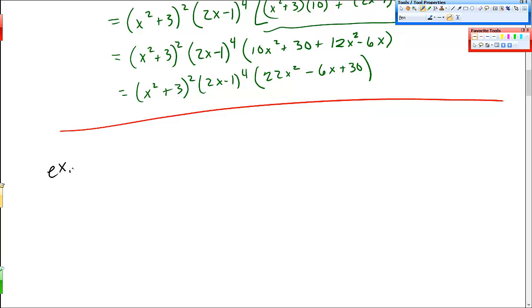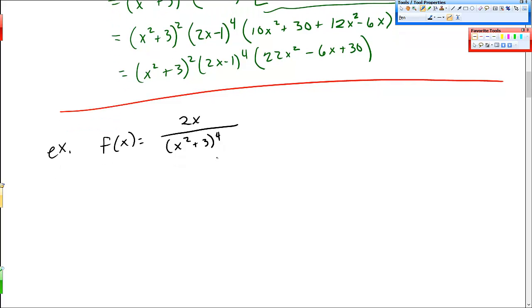Example. Let's do f of x is equal to 2x over x squared plus 3 to the fourth power. And so the main thing, okay, so the first thing I see in this problem is this big division sign. And so to me that says and kind of screams that I need to use the quotient rule. It's a quotient of two things.